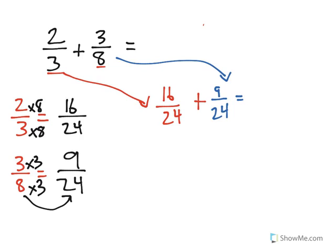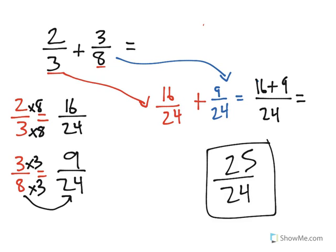Now I can add the two because my denominators are the same. I add the numerators: 16 plus 9. The denominator remains. 16 plus 9 is 25, and 24 stays our denominator.